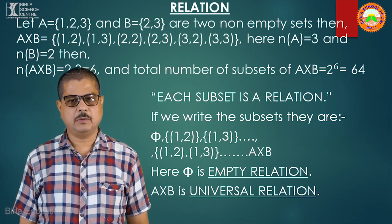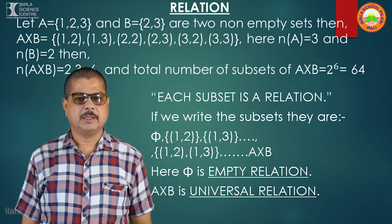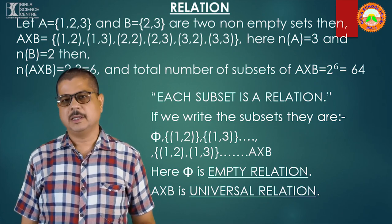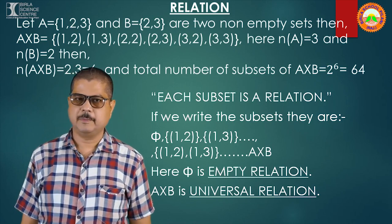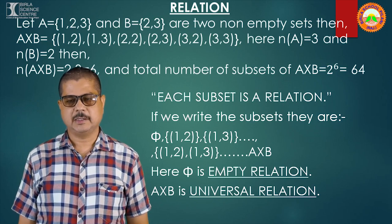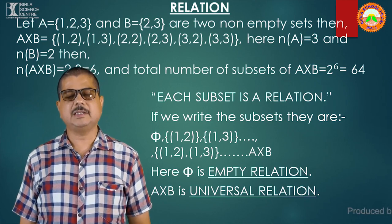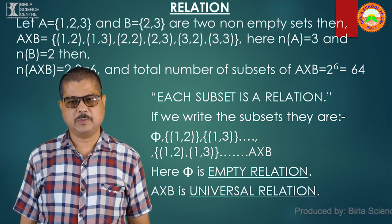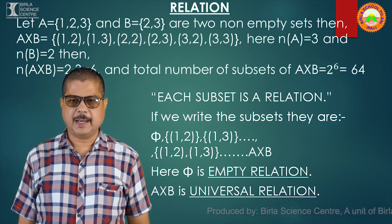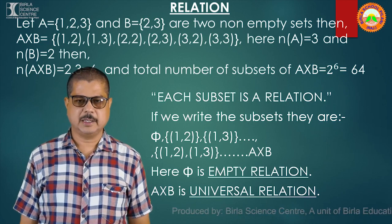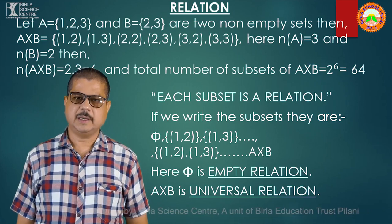Then {(1,2)}, {(1,3)}, like this. Then we will take 2 elements together, then 3 elements together, then 4 elements and so on, and finally A×B, the set itself. Each subset is a relation. This is the definition of relation — what relation is: it is a subset of the Cartesian product A×B. The empty set is known as an empty relation or null relation, and A×B itself is known as a universal relation.